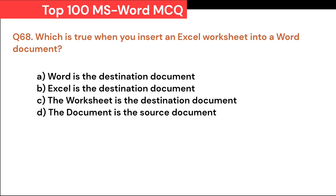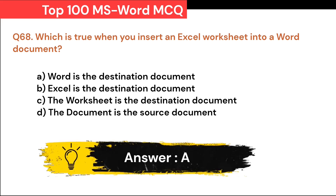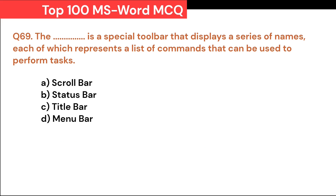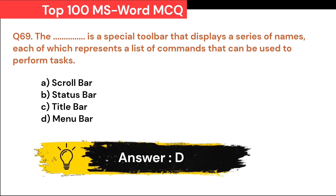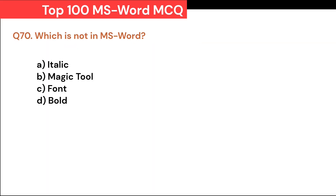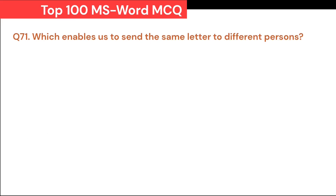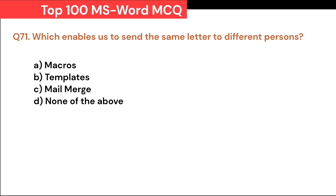The Dash is a special toolbar that displays a series of names, each of which represents a list of commands that can be used to perform tasks: A. Scroll bar. B. Status bar. C. Title bar. D. Menu bar. Correct answer is D. Menu bar. Which is not an MS Word feature? A. Italic. B. Magic tool. C. Font. D. Bold. Correct answer is B. Magic tool. Which enables us to send the same letter to different persons? A. Macros. B. Template. C. Mail Merge. D. None of the above. Correct answer is C. Mail Merge.